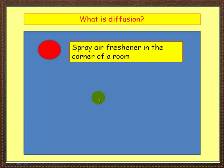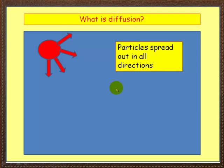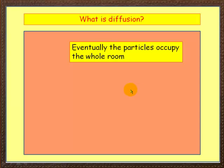Imagine standing in a room and spraying air freshener in the corner. Does the air freshener just stay in the one corner? No, obviously it doesn't. The particles will spread out in all directions until the air freshener smell occupies the whole room. This means the particles have spread out and occupied all of the available space.